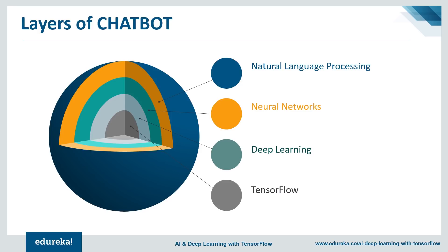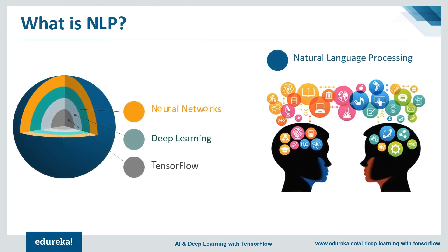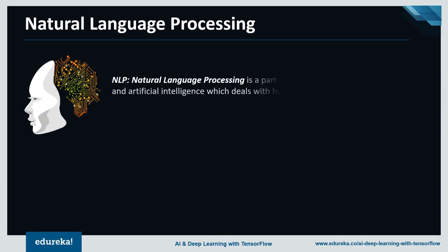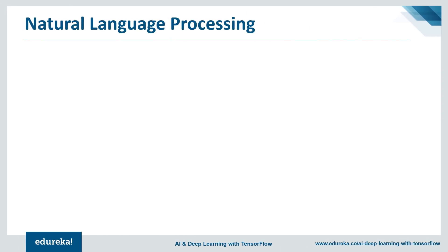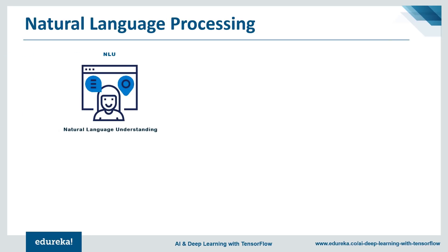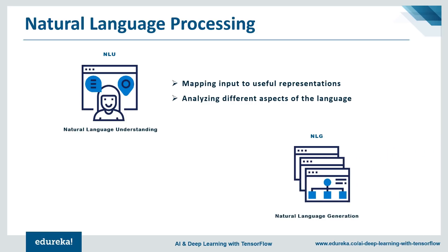Now let's discuss the layers of a chatbot in detail. The first layer is the natural language processing layer — the ability of a computer program to understand human language as it is spoken, and it is a component of artificial intelligence. The machine interprets important elements of the human language sentence and returns an answer. There are two main components of NLP: natural language understanding, which maps input into useful representations and analyzes aspects of the language; and natural language generation, which produces meaningful phrases and sentences from internal representations, involving text planning, sentence planning, and text realization.